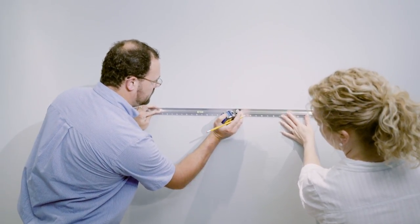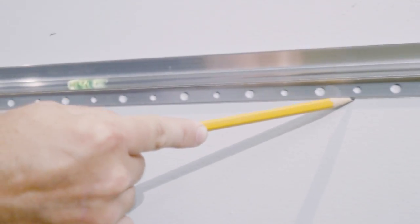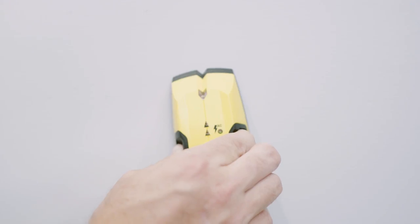Then, check the bracket's attached bubble to be sure the cleat bracket is level. Once the bracket is set and level, lightly mark the lower edge of the bracket with a pencil.